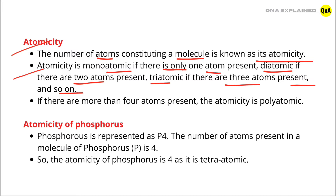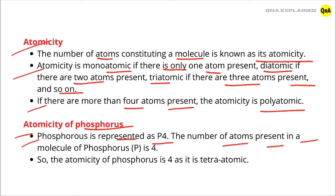And so on. If there are more than four atoms present, the atomicity is polyatomic. Atomicity of phosphorus: phosphorus is represented as P4. The number of atoms present in a molecule of phosphorus is 4. So, the atomicity of phosphorus is 4, as it is tetraatomic.